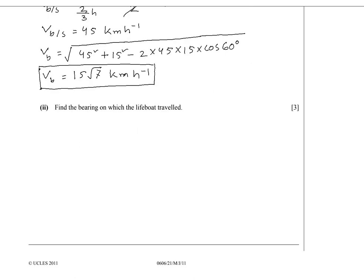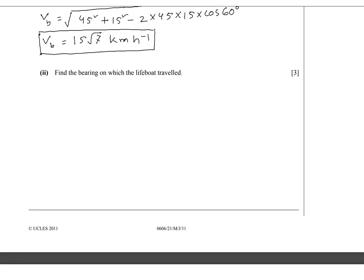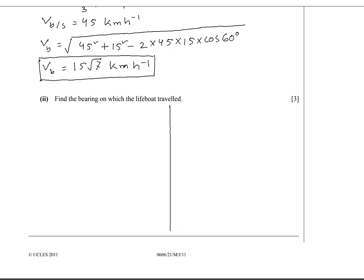Now for the second part of this question, we need to find the bearing on which the lifeboat travelled. We can use either the values of distance in the triangle or the values of velocity in the triangle. Let's use both of them side by side. On the left part of the page, we will use the values of the distances in the triangle to get the bearing, and on the right part we will use the values of velocities in a similar triangle.